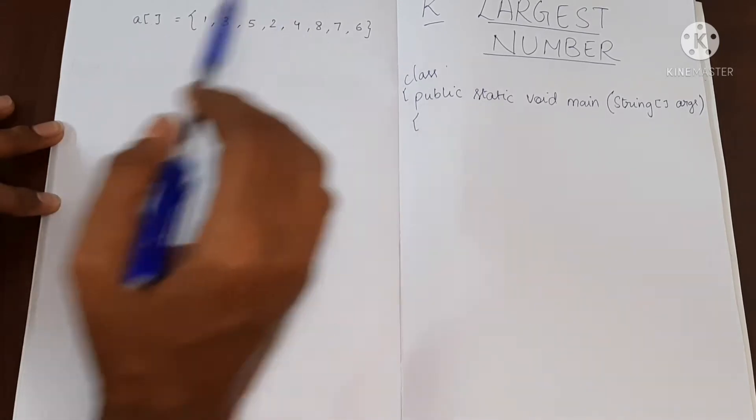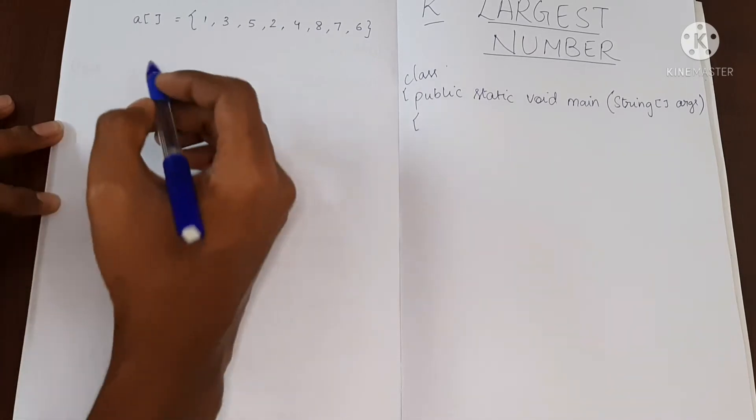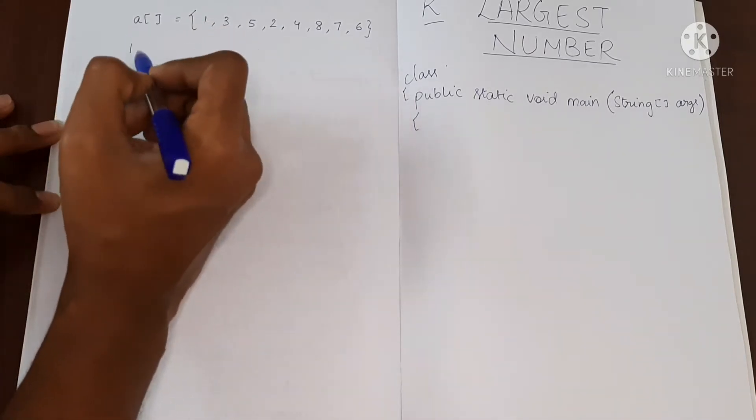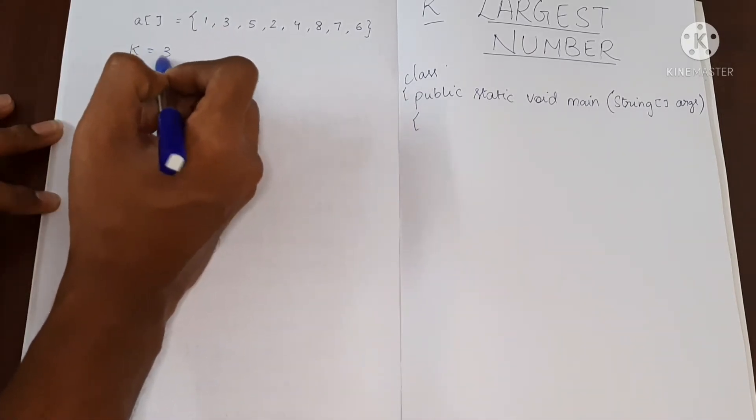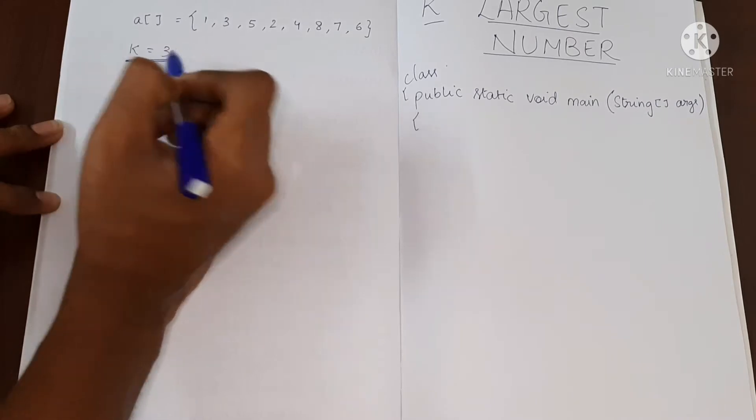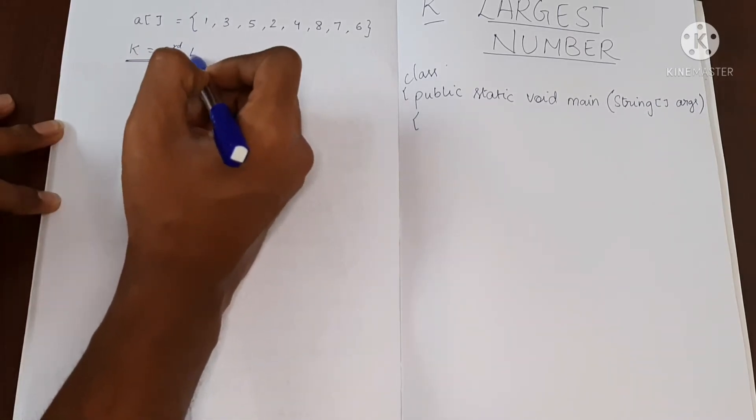Let's say we have an array with some elements. Now I have k as 3. It means I have to print the third largest value.